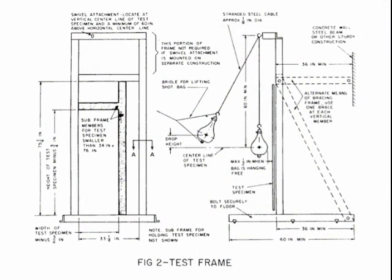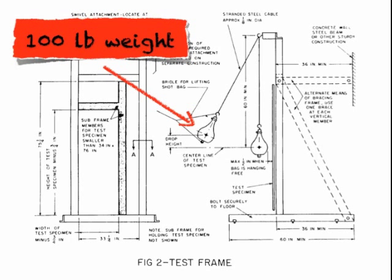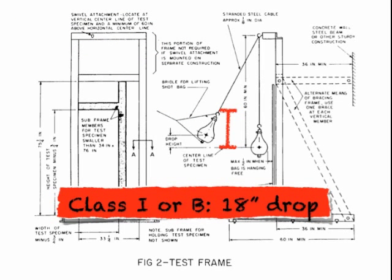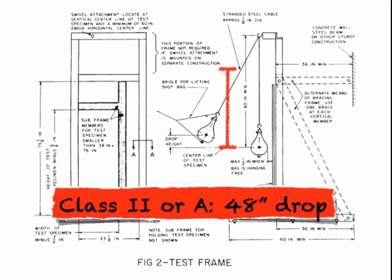This is an example of the test assembly created when glazing is tested for compliance and for meeting these standards. A 100-pound weight is anchored to this assembly and lifted to 18 inches for a Class 1 or Class B glazing — these are the less stringent test requirements. For the next class, Class 2 or Class A, the 100-pound weight is lifted to a height of 48 inches and then allowed to swing and impact the glass. This is a much more restrictive standard to pass.